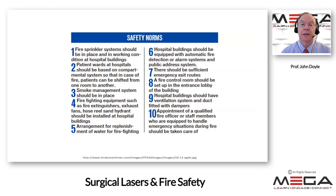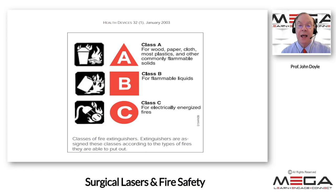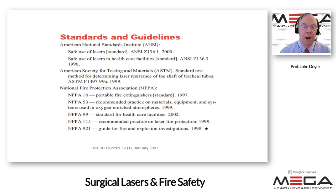When extinguishing a fire, there are various classes of fire extinguisher. Class A covers wood, paper, and cloth; Class B is for flammable liquids such as ether or alcohol; Class C is for electrically energized fires. Some extinguishers cover only one class, some cover all three — they are labeled on the side. To operate an extinguisher, remember PASS: Pull the pin, Aim the nozzle at the base of the fire, Squeeze the handle, and Sweep the nozzle from side to side.